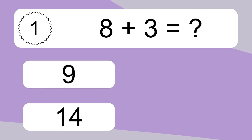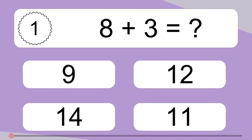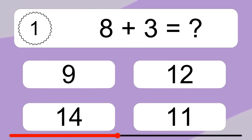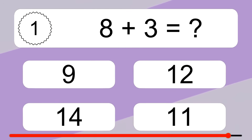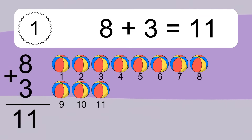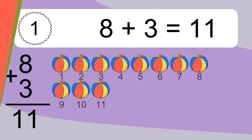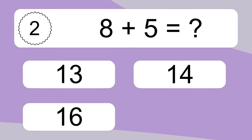8 plus 3 equals what? 8 plus 3 equals 11. Let's count it. 1, 2, 3, 4, 5, 6, 7, 8, 9, 10, 11.